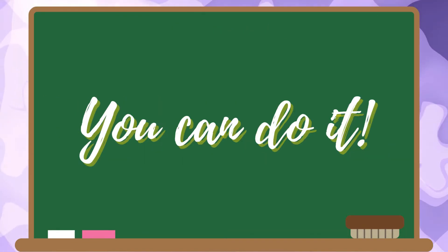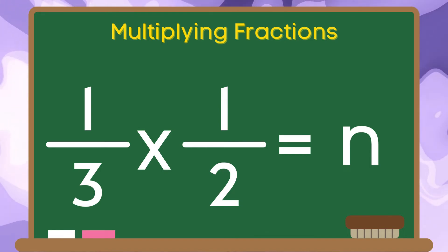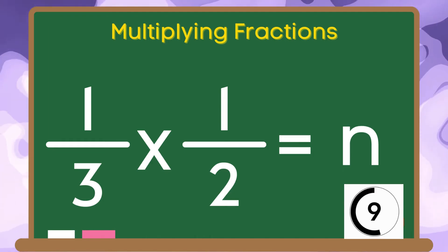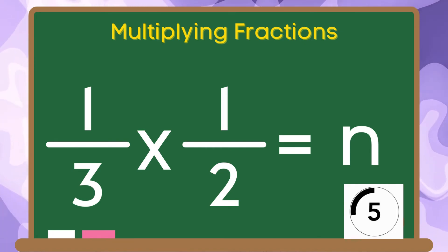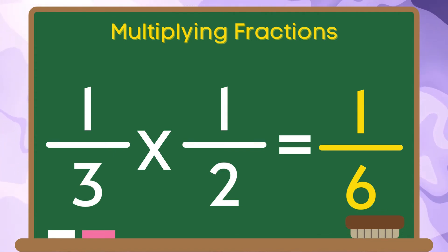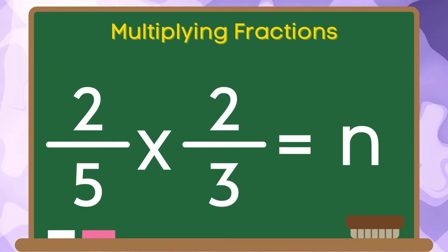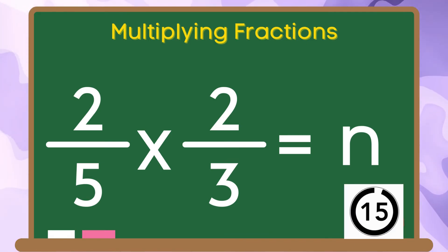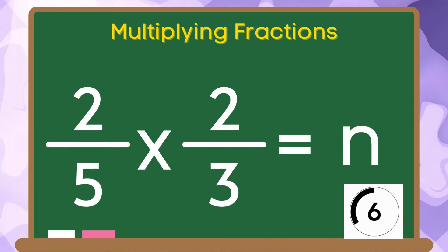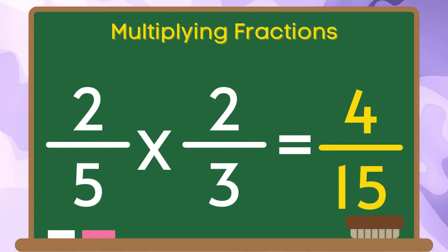Let us have some practice on what you've learned in this video. 1 third times 1 half is equal to n. The correct answer is 1 sixth. Let's get the product of 2 fifths and 2 thirds. The correct answer is 4 over 15.